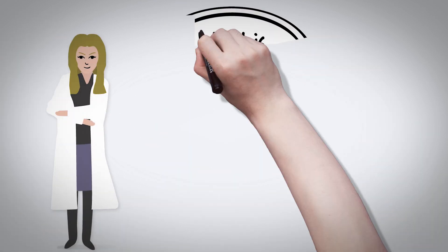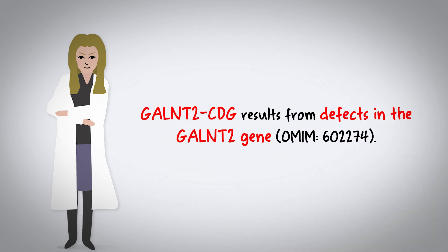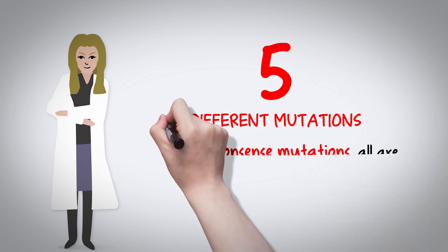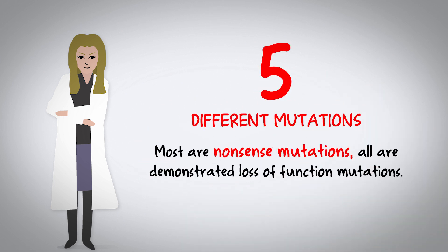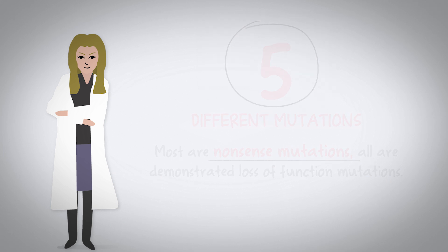What is GALNT2-CDG? GALNT2-CDG results from defects in the GALNT2 gene. In our paper, we report a total of five different mutations in the GALNT2 gene causing GALNT2-CDG. Most are nonsense mutations, and all are demonstrated loss-of-function mutations.